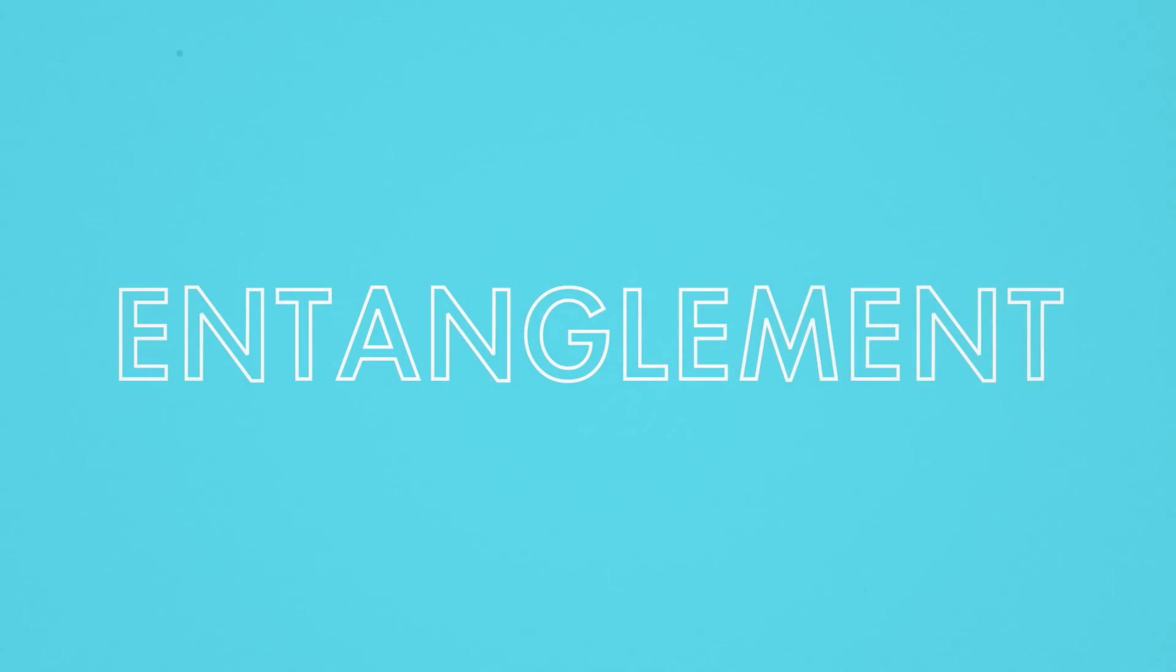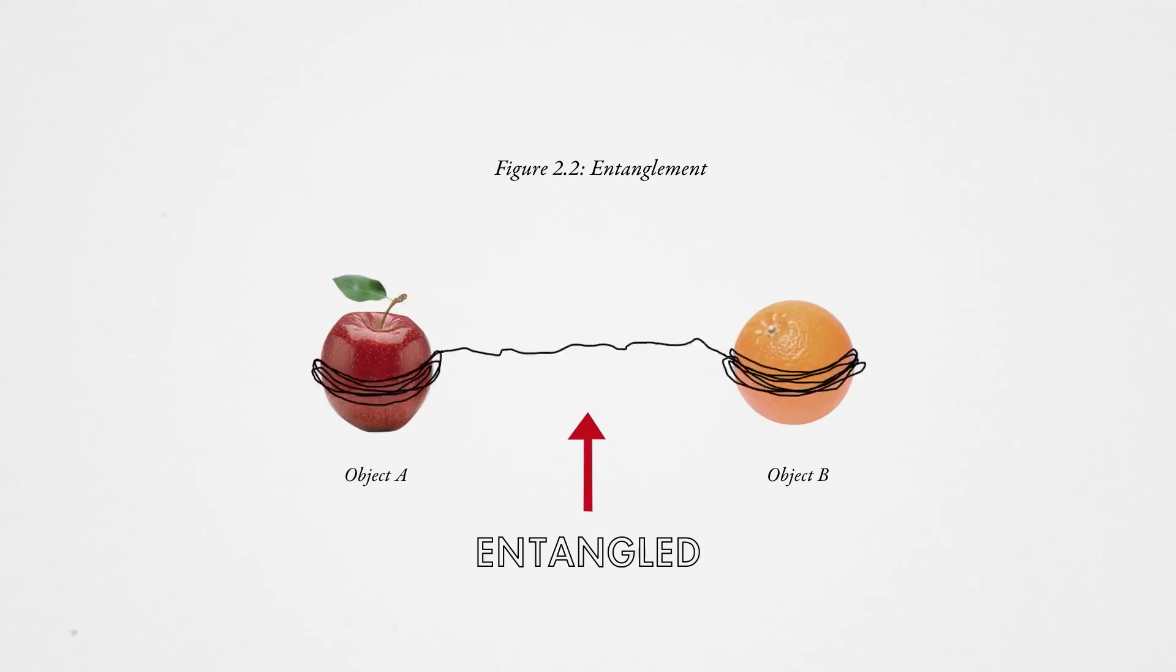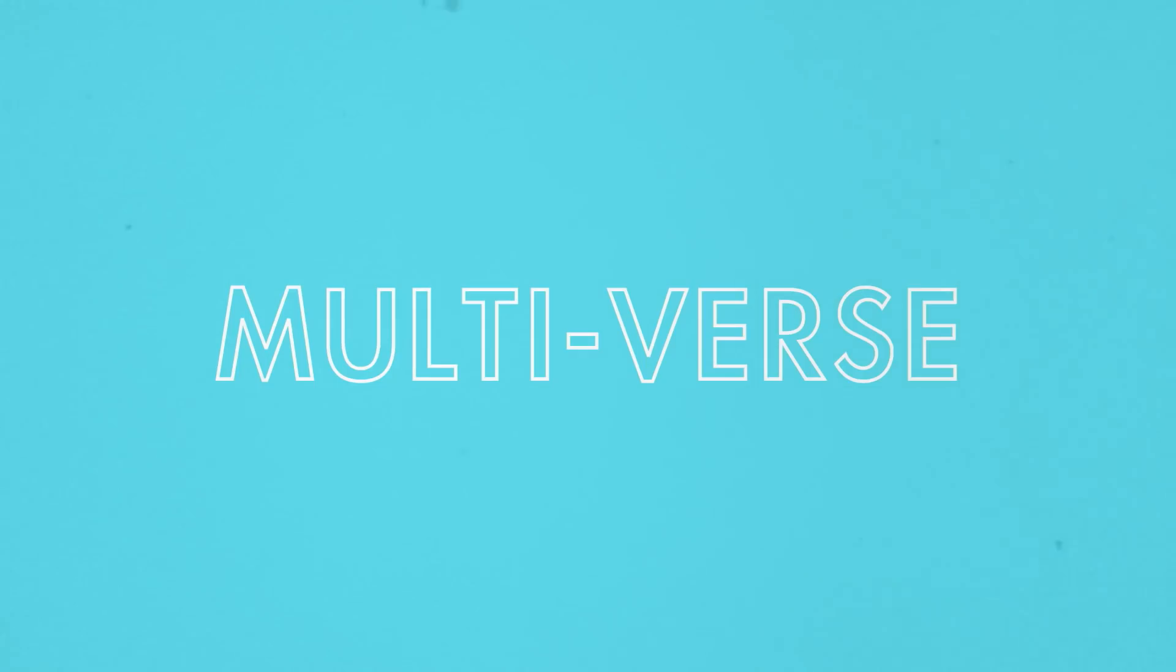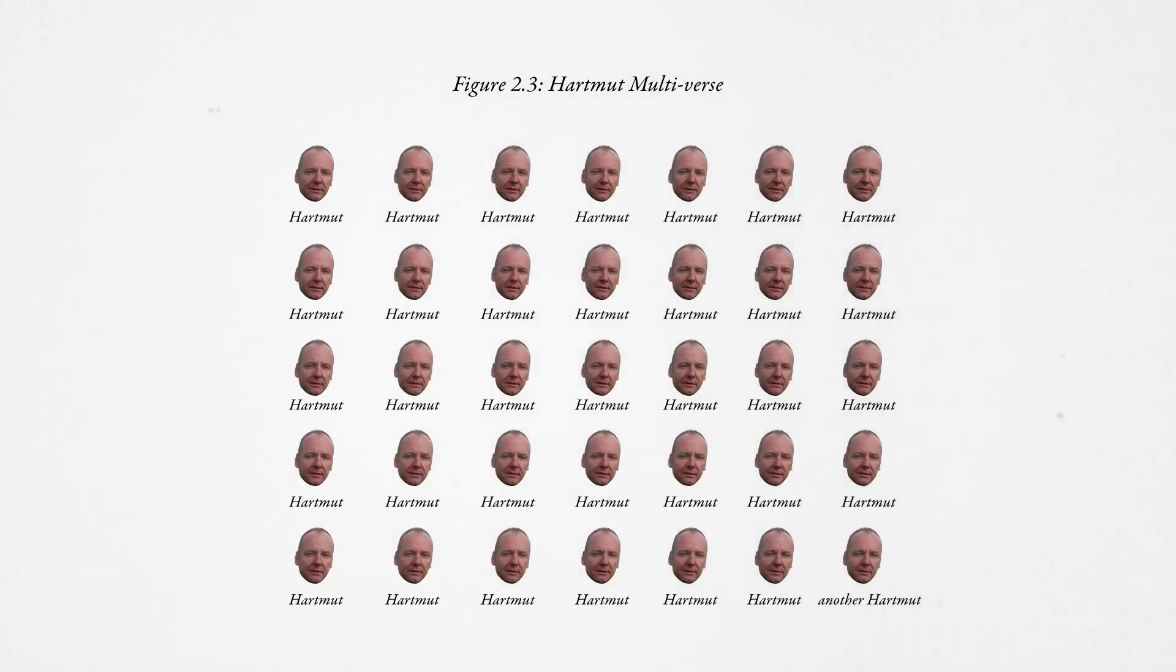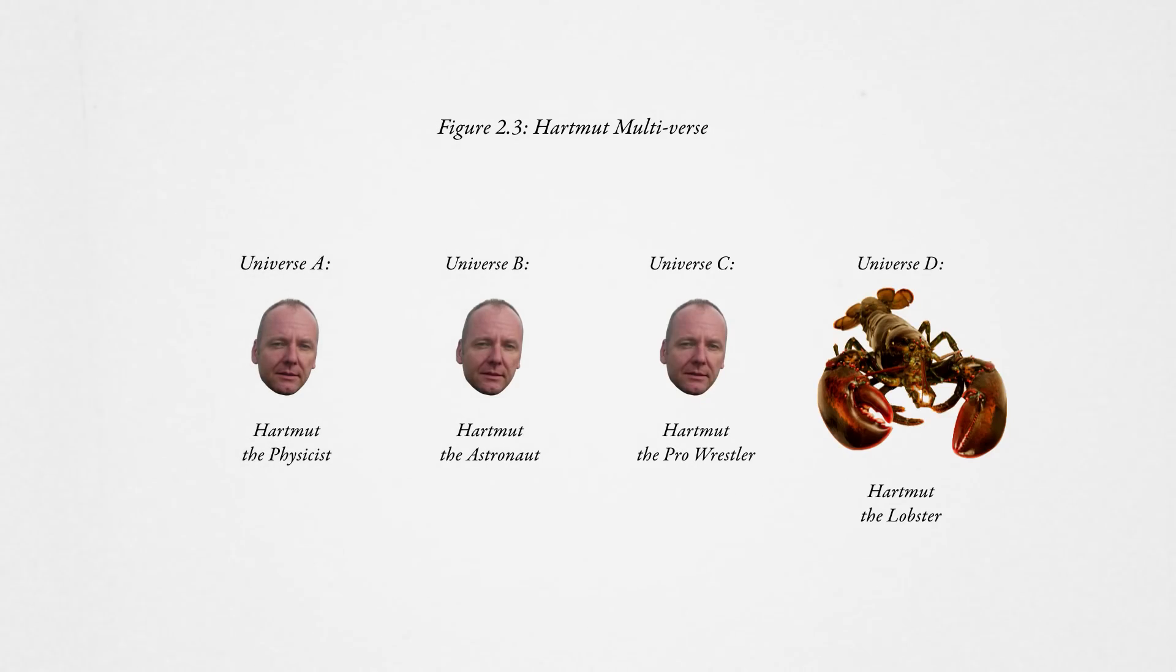Entanglement. Quantum entanglement. Two objects, if they're quantum mechanically entangled, are still strongly related to each other, even though they can be a vast distance apart. There's a notion of the multiverse. There's a whole family of Hardwoods in different states and then going through different experiences and different life trajectories.